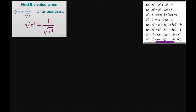To do that, I'm going to take our given and rewrite it in rational form, meaning I'm going to write x to the power of 1/3 plus x to the power of negative 1/3 equals 2.